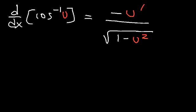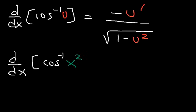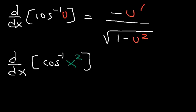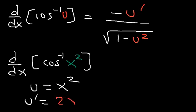Let's find the derivative of the inverse cosine of x squared. Clearly, u is equal to x squared. If u is x squared, then u prime is the derivative of x squared, which is 2x.